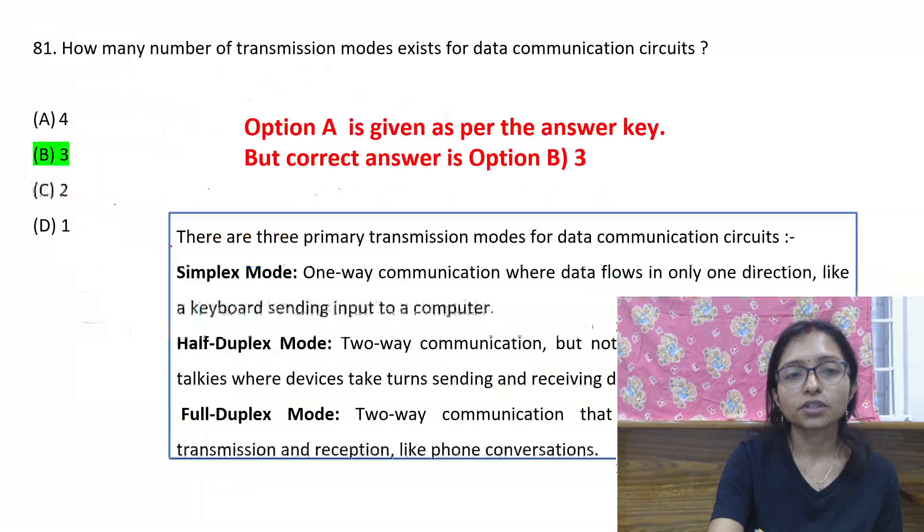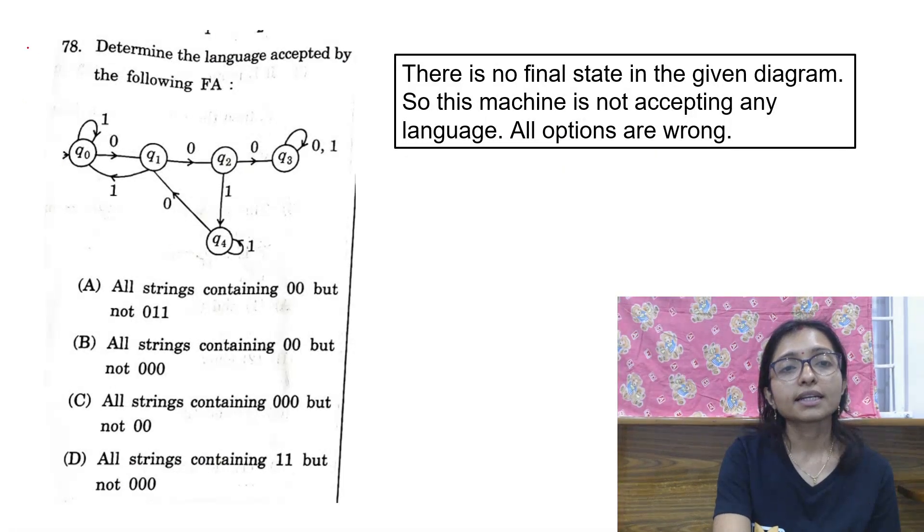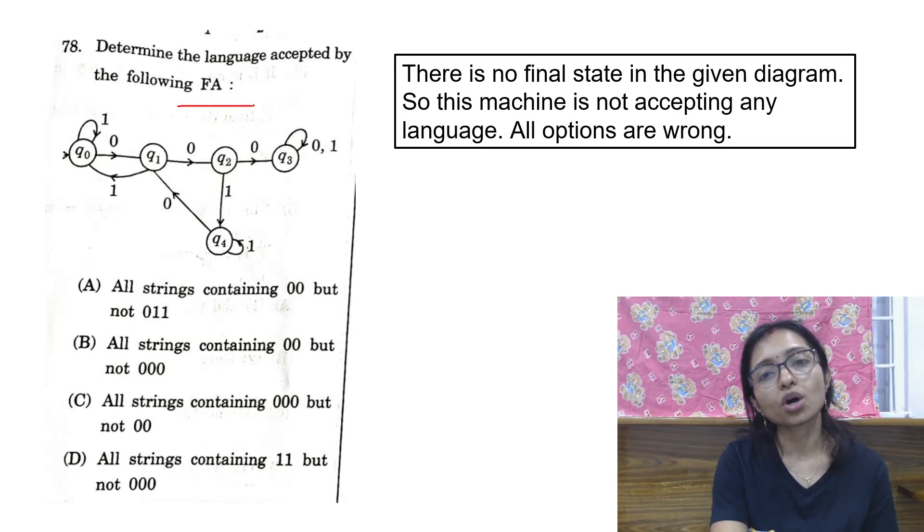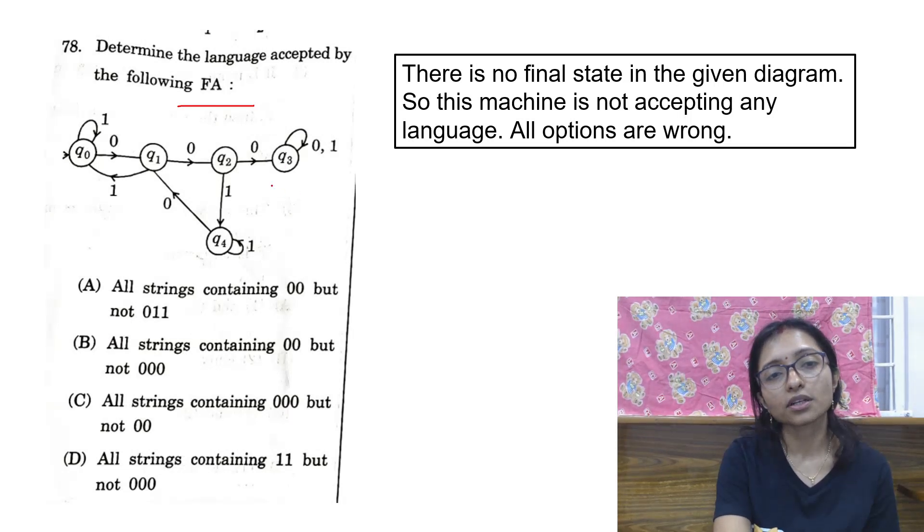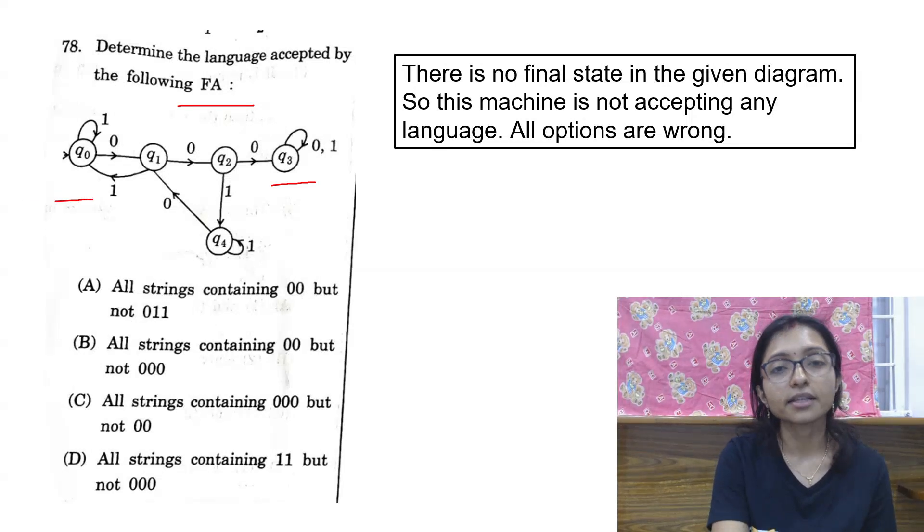Next question is this one: determine the language accepted by the finite automata. This finite automata is not accepting any language because there is no final state. No final state given. So when the final state is not given, how we can decide? So this question is also wrong.